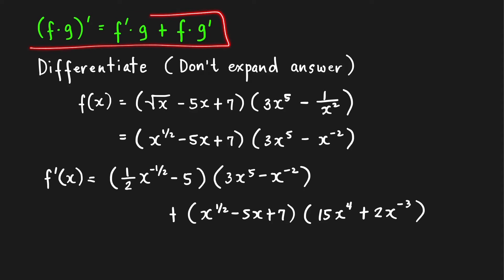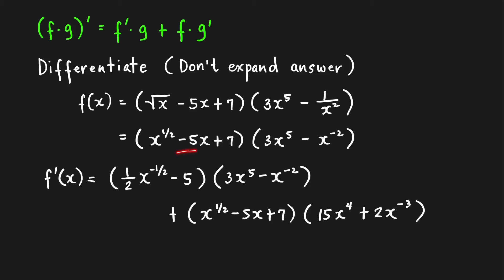We apply the product rule: take the derivative of one factor at a time. First, find the derivative of x^(1/2) — bring down the power and subtract 1 from the power. The derivative of −5x is −5 times 1, which is −5. The derivative of a constant is 0.